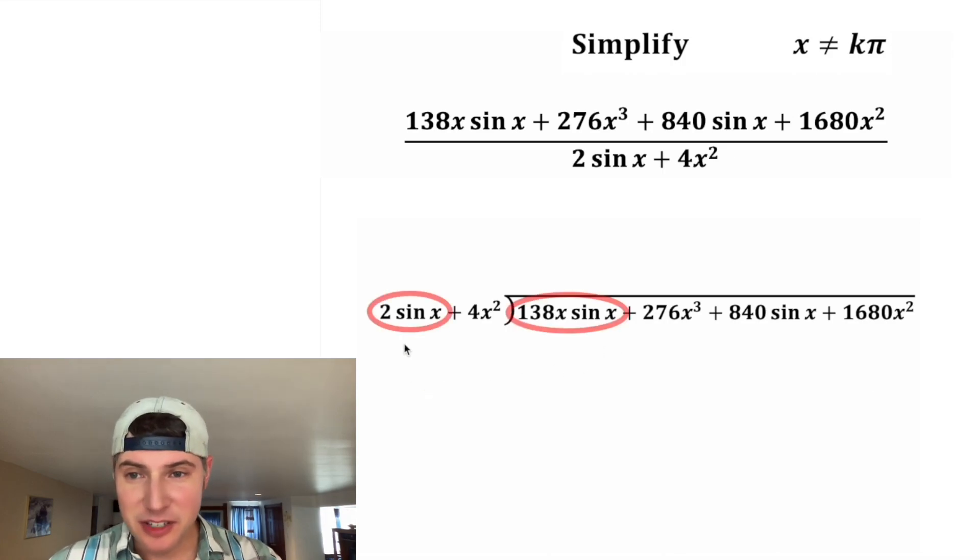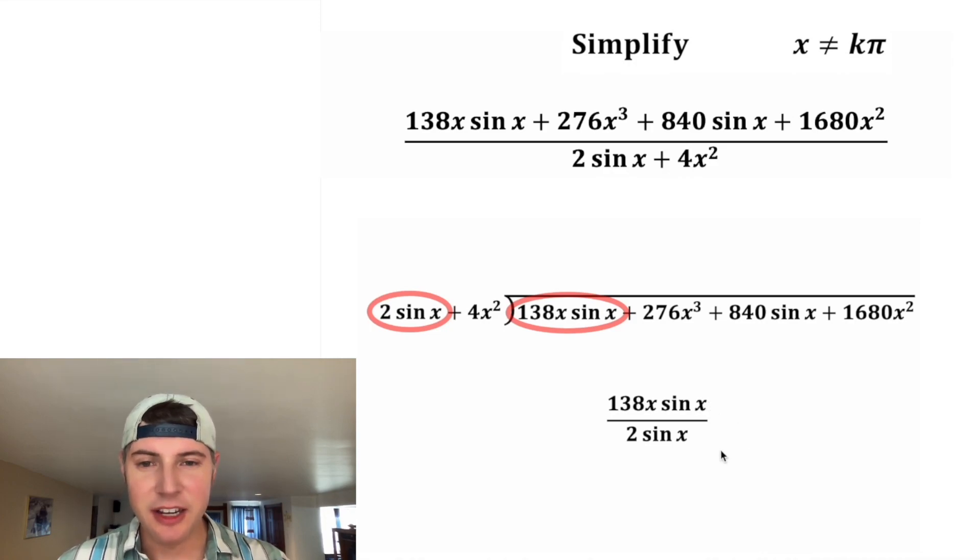So first we've got to figure out how many times does this go into this. Probably the easiest way to do that would just be to divide the two. So sine x over sine x, those are going to take care of each other. And then 138 over 2 is equal to 69. So this will go into this 69x times. Now we can move this up here.